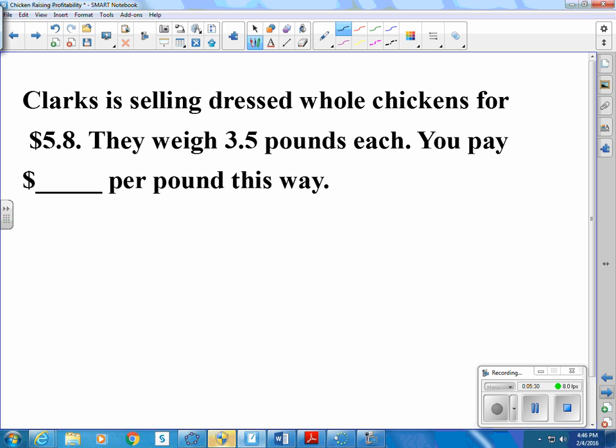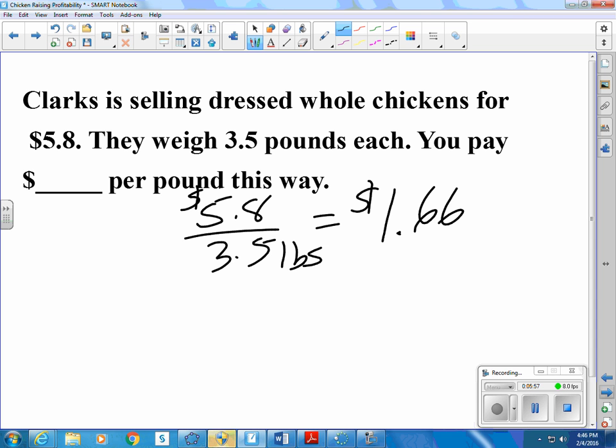Clark's is selling dressed whole chickens for $5.80. They weigh 3.5 pounds each. You pay what per pound this way? So we want to know 5.8 dollars for 3.5 pounds. That turns out to be a dollar and 66 cents per pound.